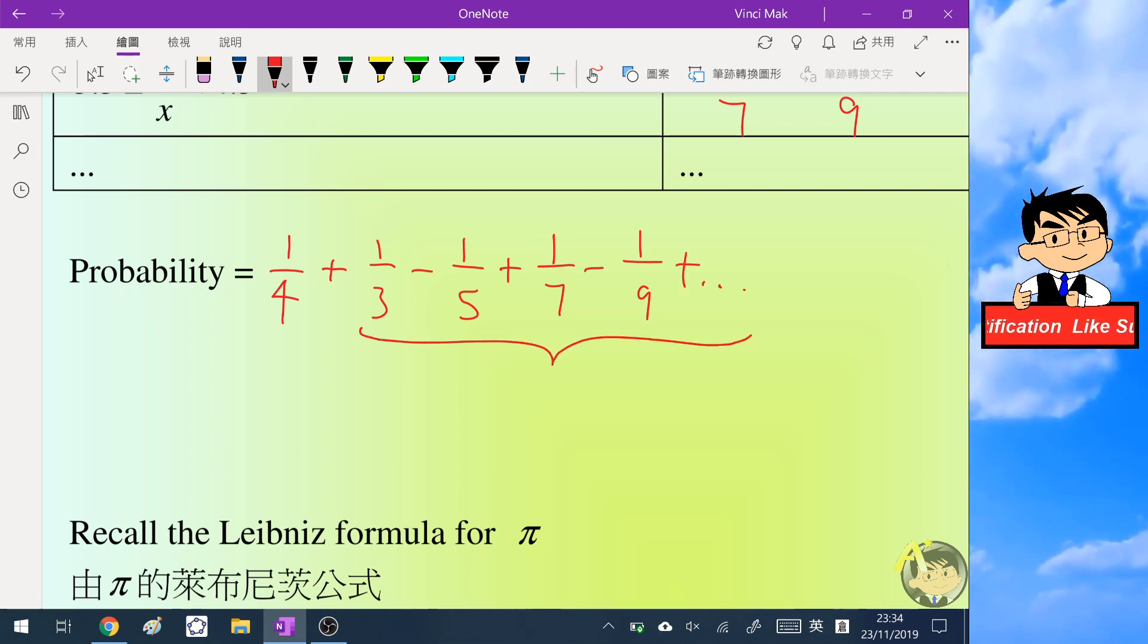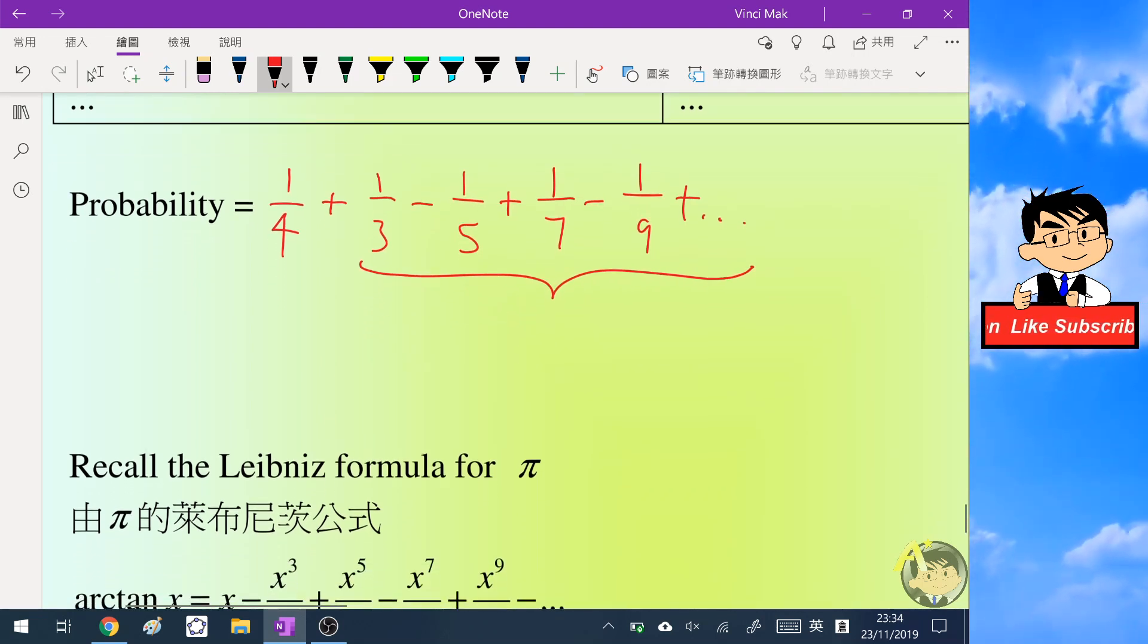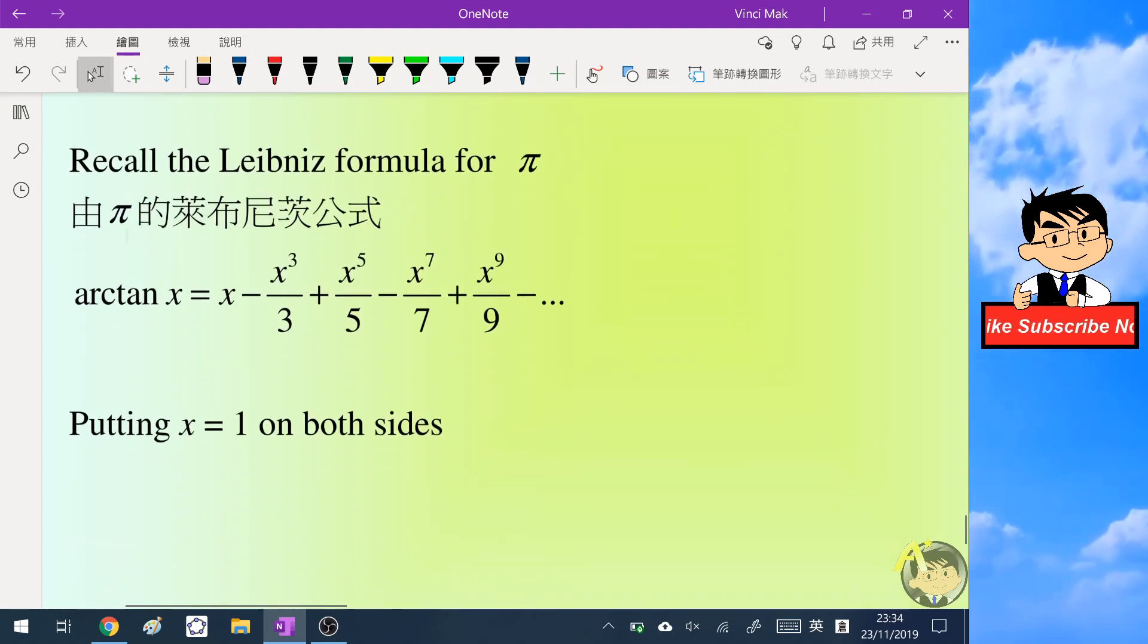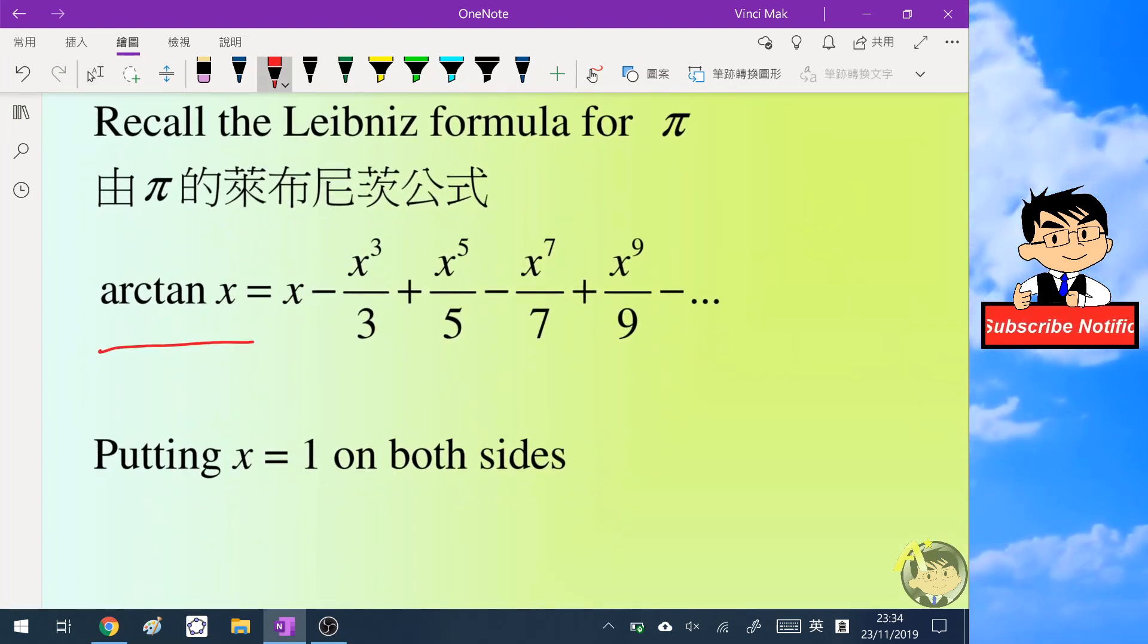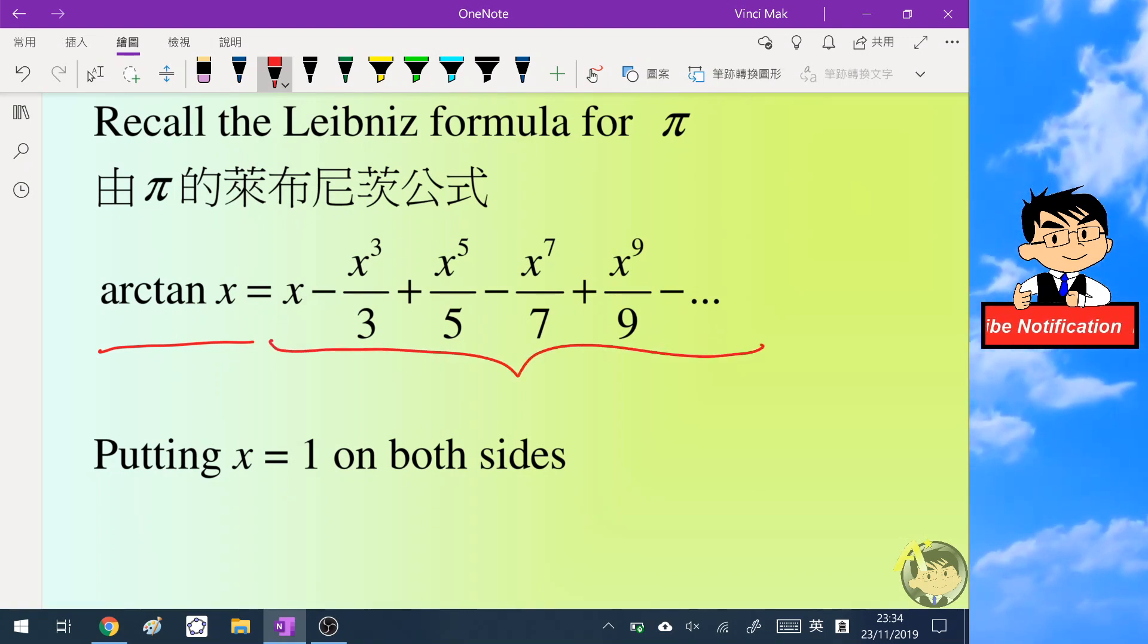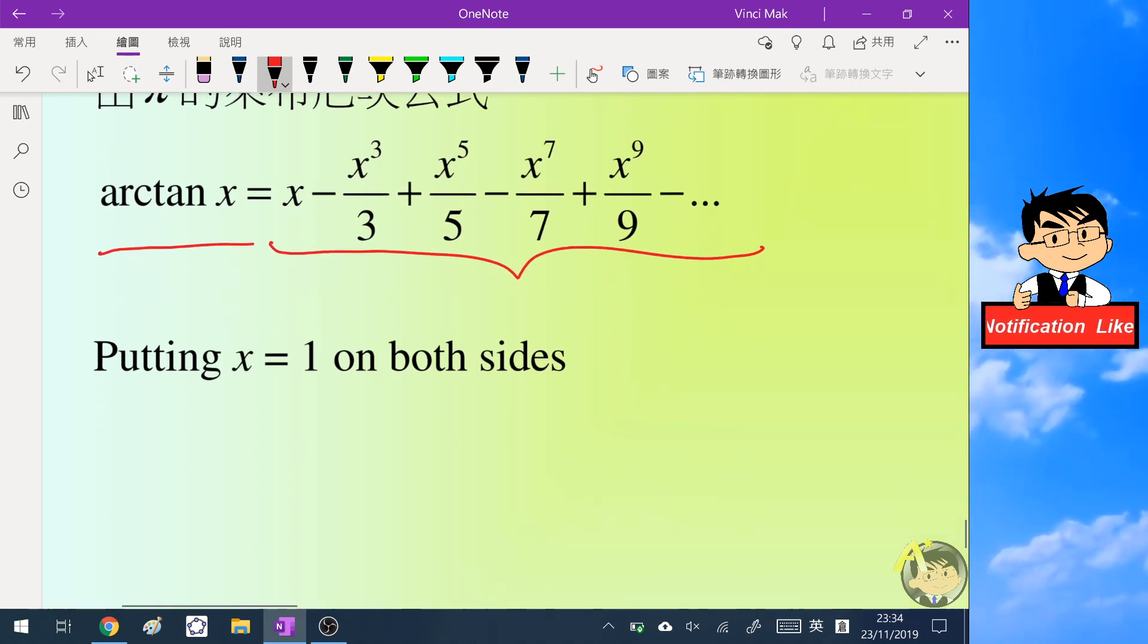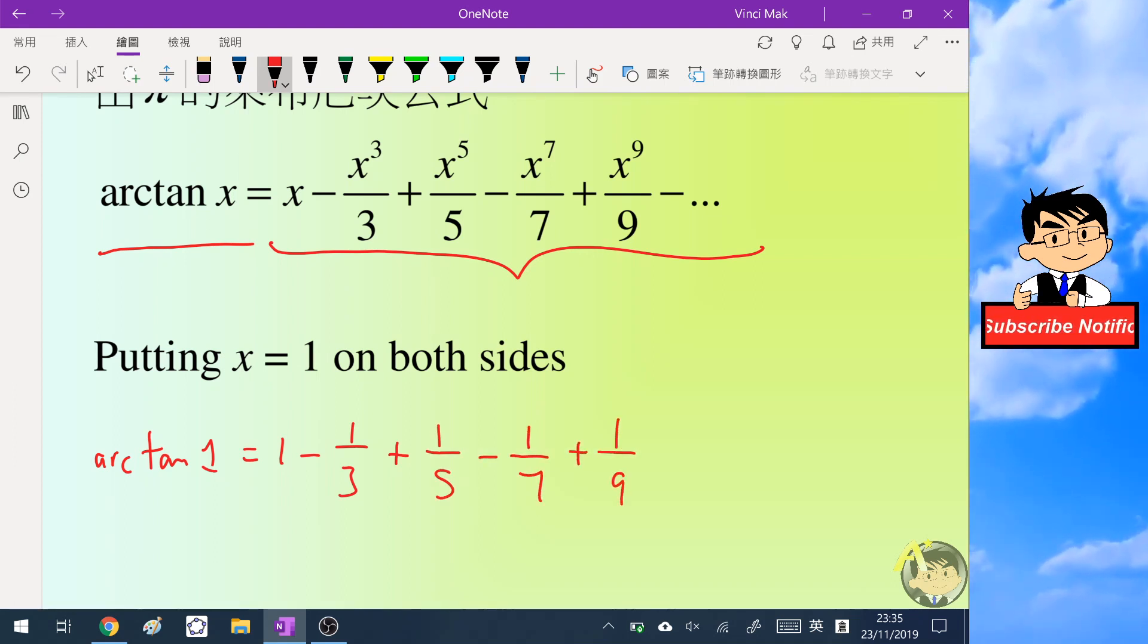The later part here is very similar to the Leibniz formula for π. We know that arctan(x) can be expressed as a series like this on the right hand side. If we now put x equals 1 on both sides, the left hand side is arctan(1) and the right hand side is 1 - 1/3 + 1/5 - 1/7 + 1/9 minus dot dot dot. And arctan(1) is π/4.